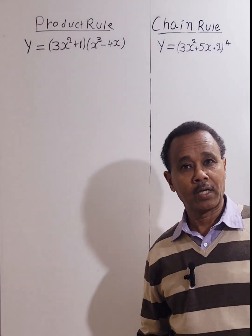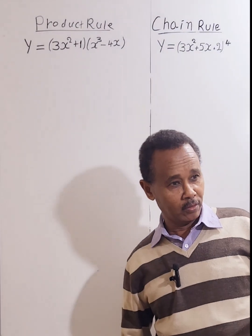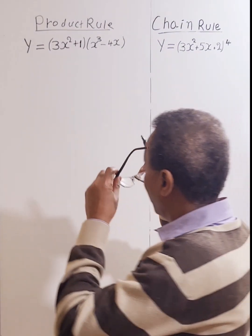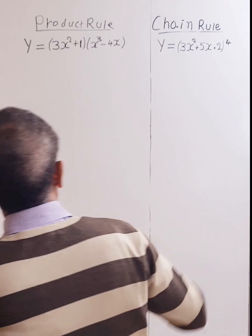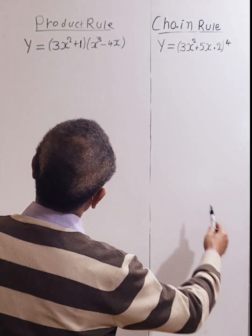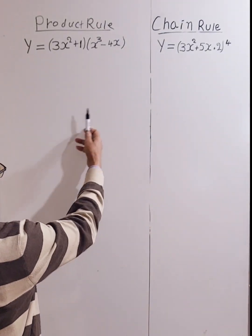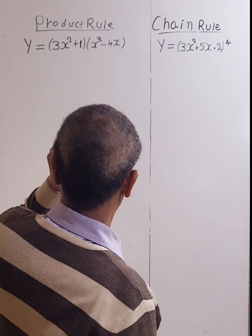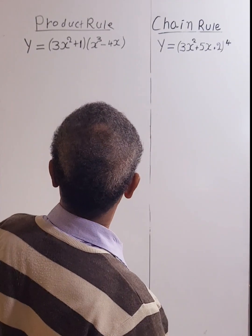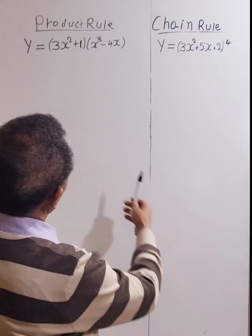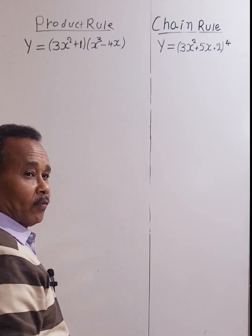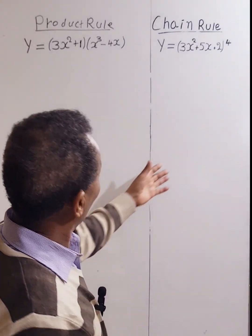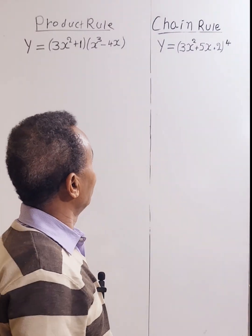Hello everyone, welcome to this video. As you can see, there are two different methods of differentiation. On the left side we have the product rule and on the right side we have the chain rule.